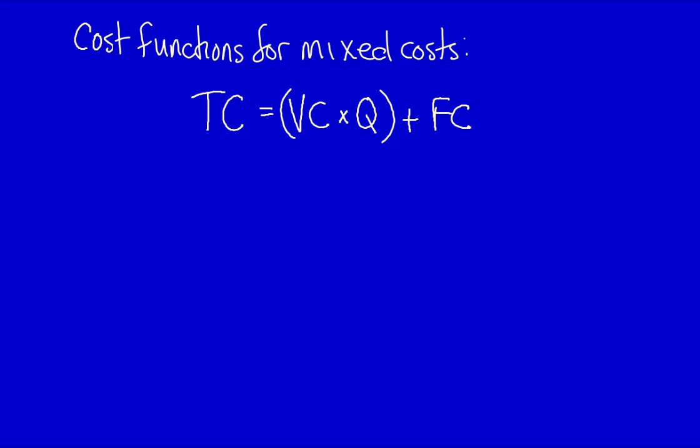Sometimes it's easy to identify the variable and fixed components of a mixed cost, but a lot of the time, the only information available is the total mixed cost and the cost driver. It's the accountant who has to separate the fixed and variable costs into their individual components so that it can be used to predict total costs at different levels of activity. First, we have to be able to recognize when costs are mixed.